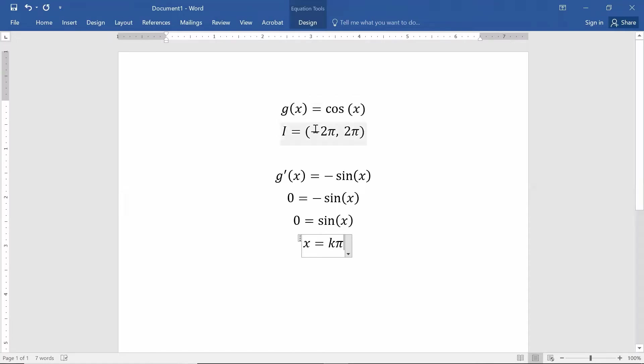Because we're in between negative 2π and positive 2π, that means x could be equal to negative 2π, x could be negative 1π, x could be 0π, x could be positive 1π, or x could be 2π.